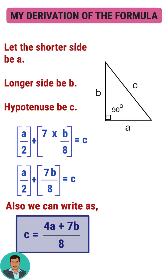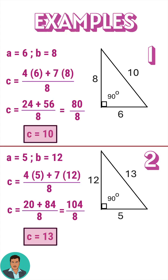My research revealed the formula: C equals 4 times the shorter side A, plus 7 times the longer side B, divided by 8. For a triangle with sides 6 and 8, this formula gives an exact 10. And for sides 5 and 12, it gives an exact 13.